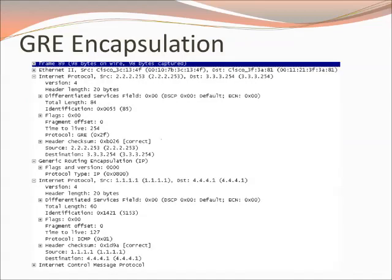Here is an example of an encapsulated packet. If you look at the first IP header traveling down from the top, you can see the source and destination addresses are 2.2.2.253 and 3.3.3.254 — these are the two endpoints of the tunnel. Scrolling all the way down, you'll see the Generic Routing Encapsulation header, and that encapsulates the original IP packet destined from host 1.1.1.1 to host 4.4.4.4. That's the original IP packet. This is what we mean by encapsulation — you can see clearly there are two IP headers.